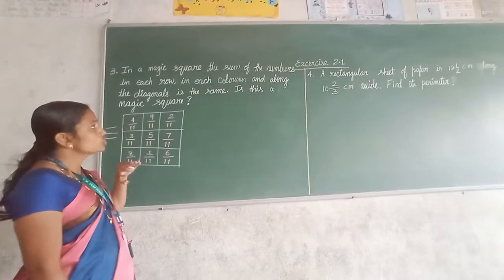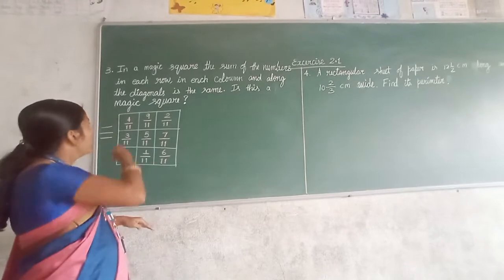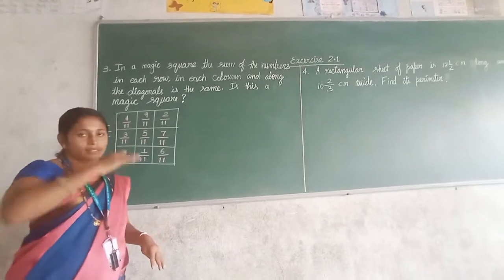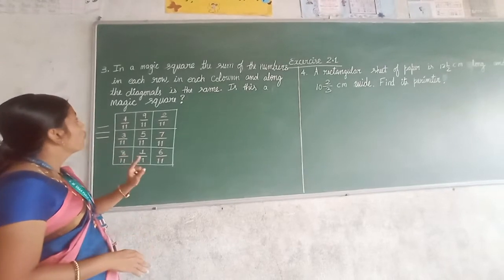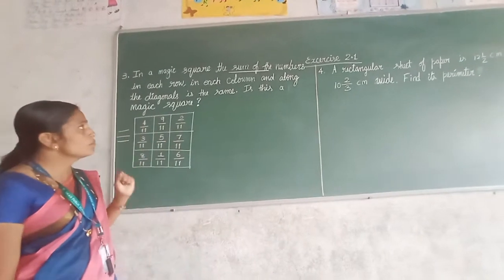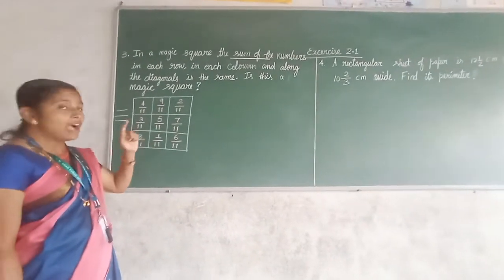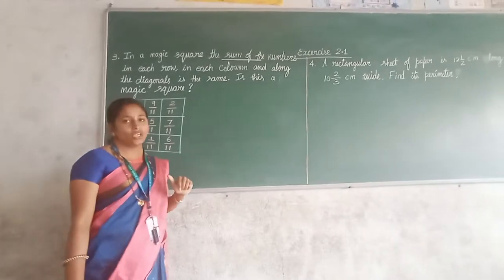The horizontal lines are called as row. Each row, each column, column in the sense like vertical, and along the diagonals. Diagonals means slanting is the same. What is the same? The sum must be the same.